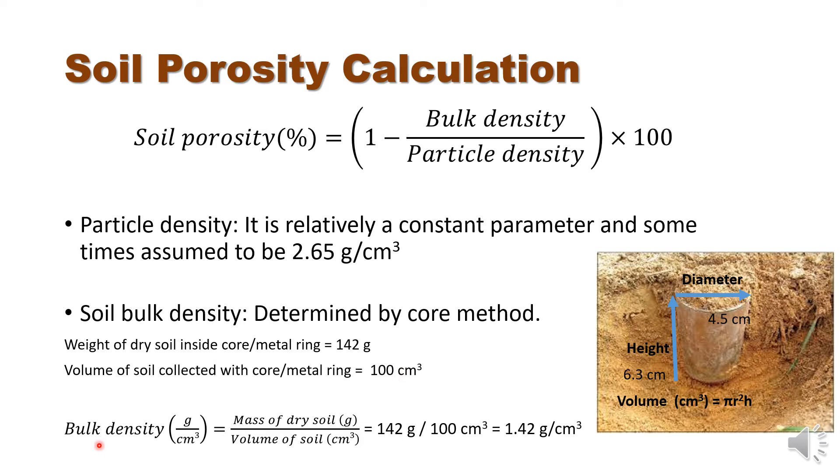The bulk density equals mass of dry soil divided by volume of soil. Mass of dry soil is 142 grams, and if we divide it by 100, the volume of soil, we will find 1.42 grams per centimeter cubed bulk density.